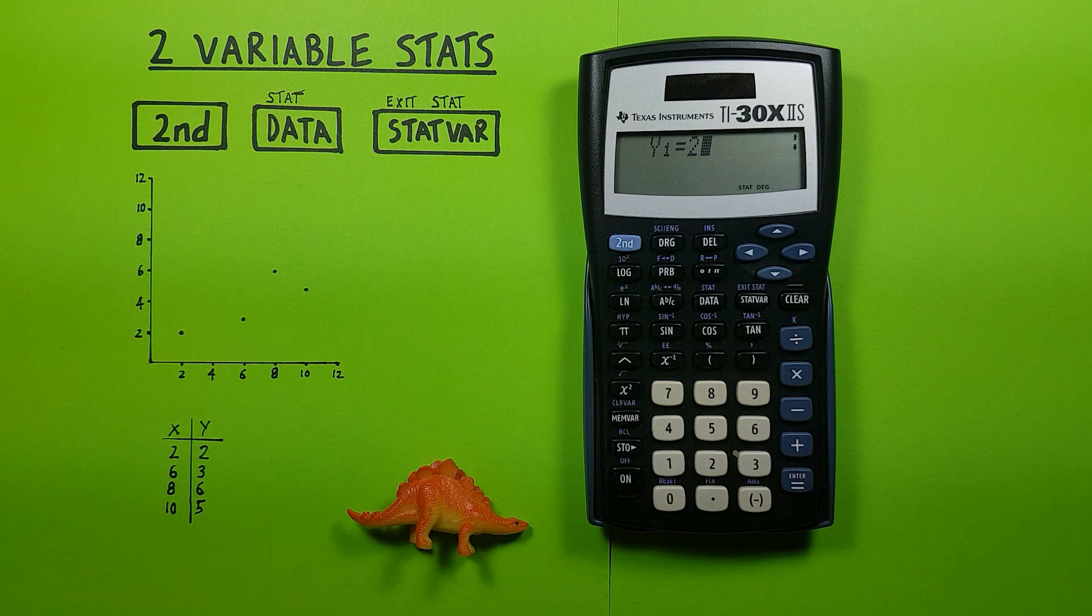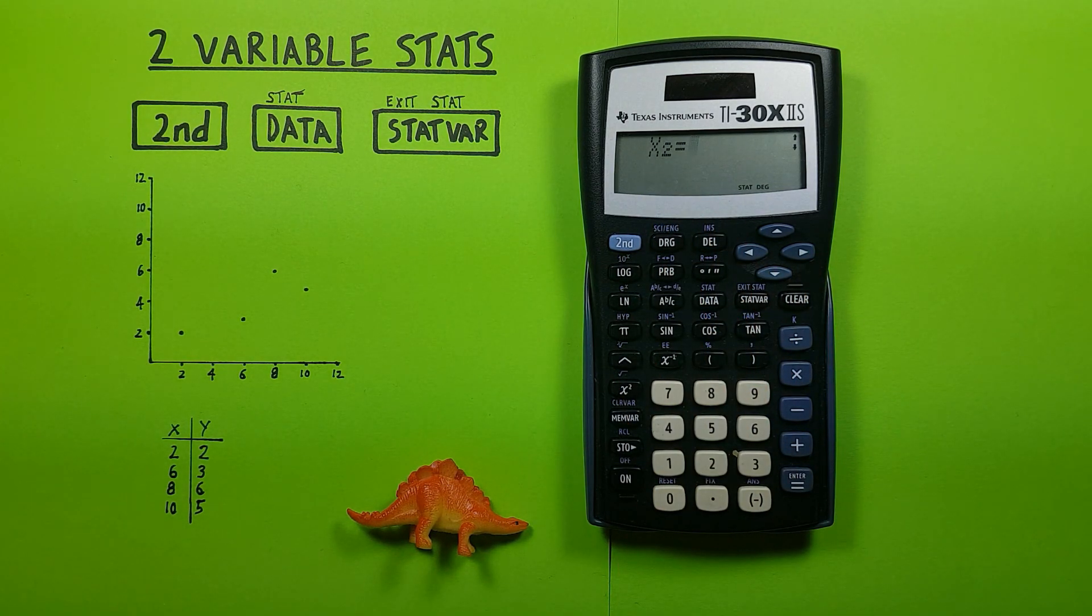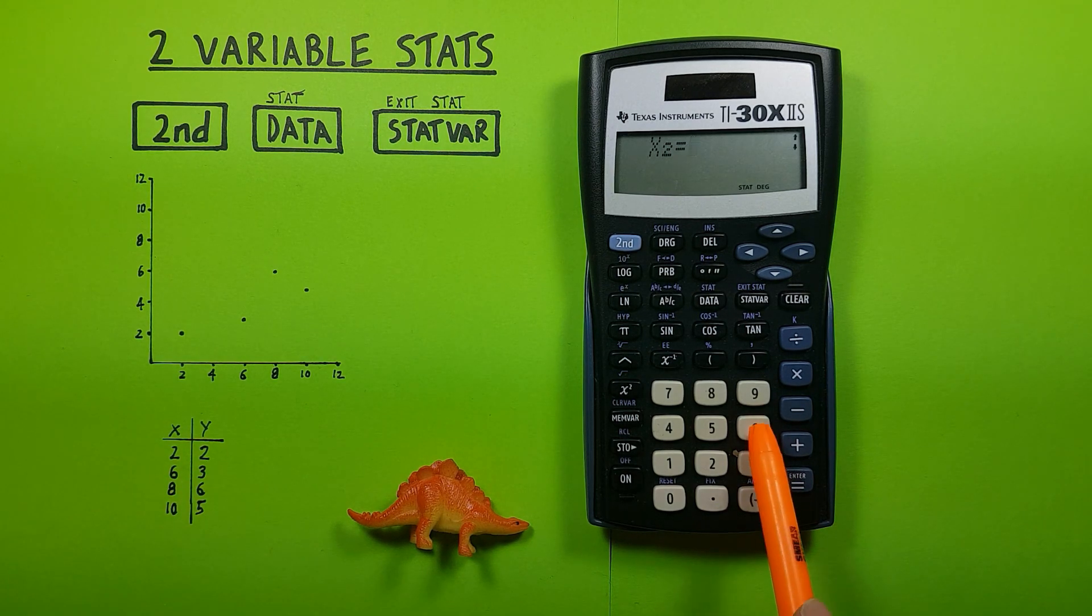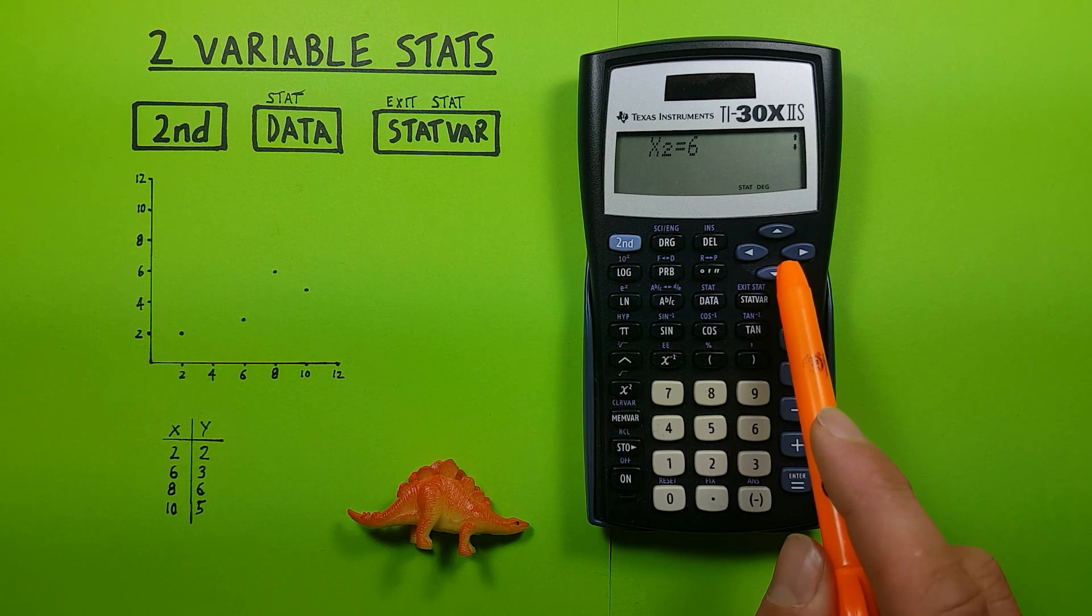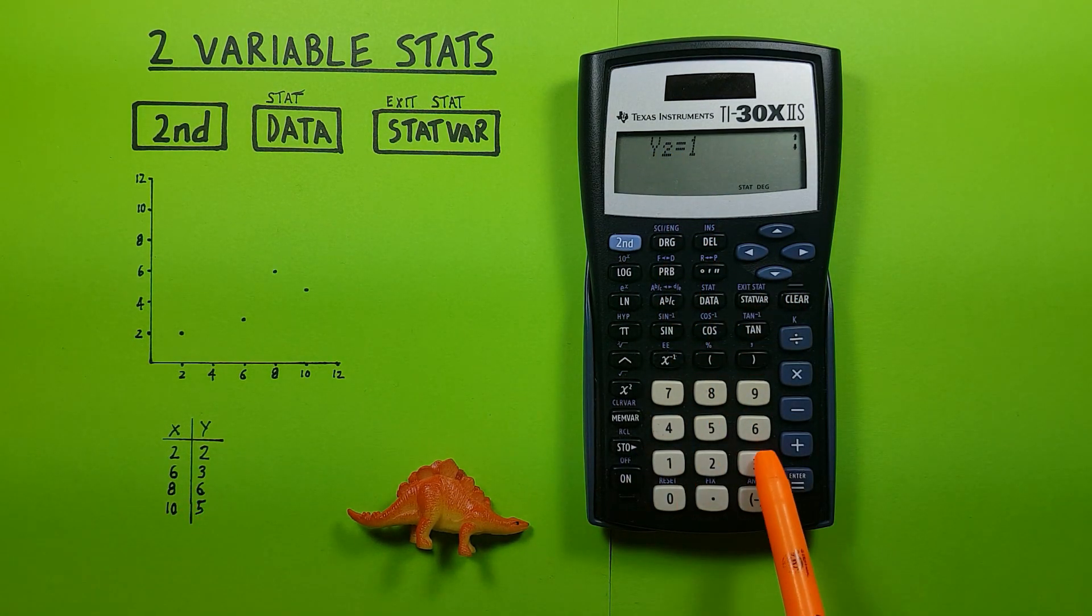Then we can just press down again and we see x2 equals. This is asking for our next point. We have an x equals 6, y equals 3. So we press 6, down, y2 for us that's 3 here.